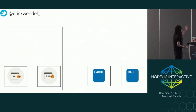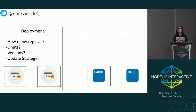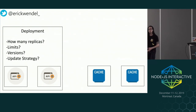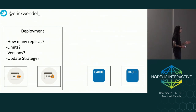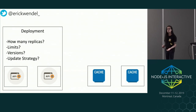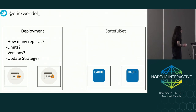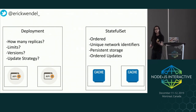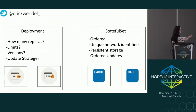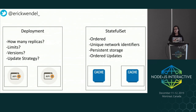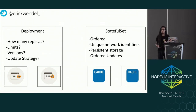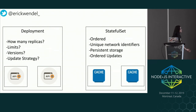Deployment will specify how many replicas, how many copies, we will have of a project — what is the limit, how much memory or CPU your application will use, versions, and how you will expose to your consumers. For databases, we usually use StatefulSet. Whereas deployment files are stateless, StatefulSet can persist data storage. We can use unique network identifiers and make everything in order, including graceful deletions of all instances in order. It's very powerful for databases and anything that stores data.